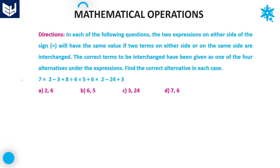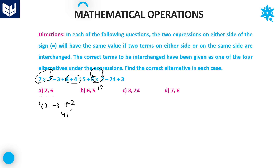In the next question, option A involves interchanging 2 and 6: 2 is replaced with 6 and 6 is replaced with 2. First priority is division: 8 by 4 is 2. Then multiplication: 7 into 6 is 42. So 42 minus 3 plus 2 gives 41 — left hand side is 41. For the right hand side, multiplication gives 2 into 6 equals 12, and then minus 24. Since we have minus 24, we definitely will not get 41, so eliminate option A.